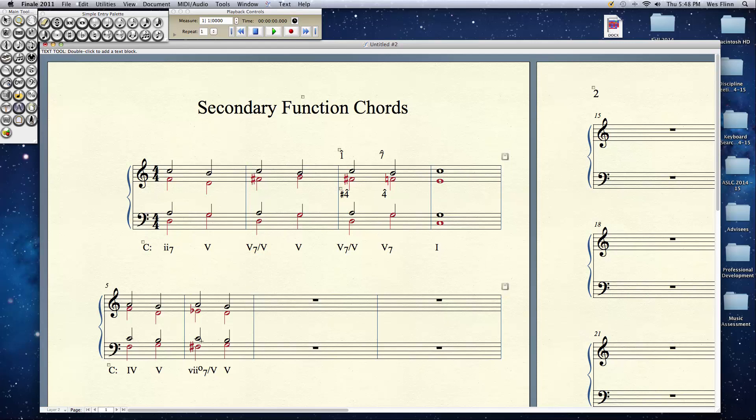This is a vii fully diminished 7. If I had left it as an E natural, we could have called it just a vii half diminished 7. But a vii fully diminished 7 of 5, resolving to 5. Listen to it again.